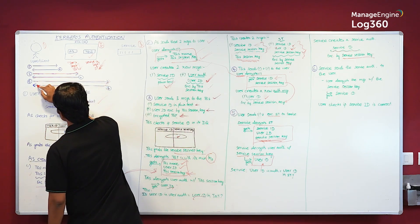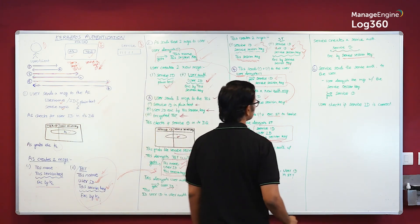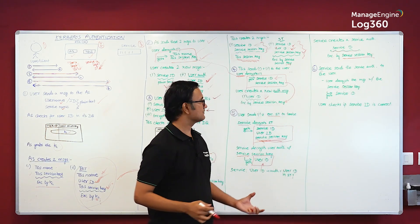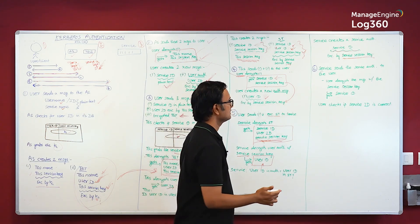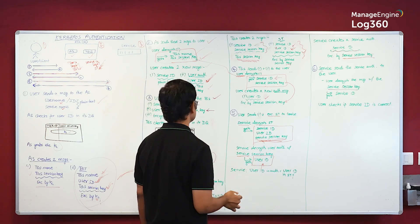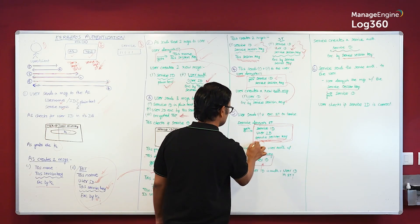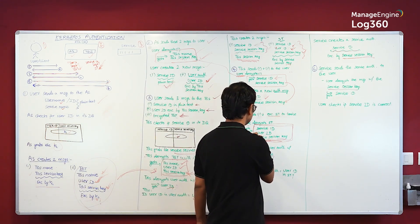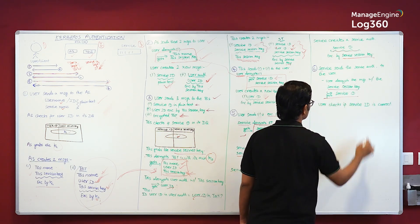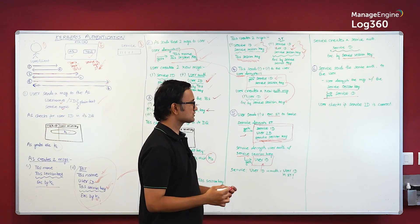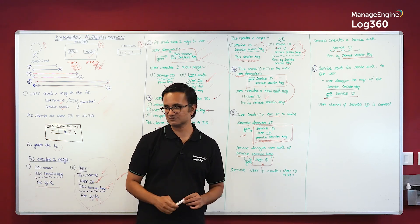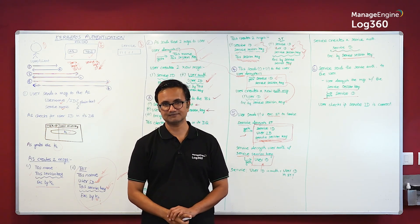Step six: the service sends the service authenticator to the user. The user decrypts it using the service session key it already has, retrieving the Service ID. The user then verifies that this is indeed the service it originally requested. With that, the authentication process is complete.